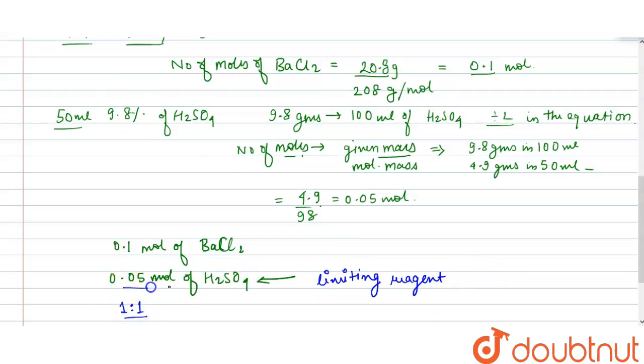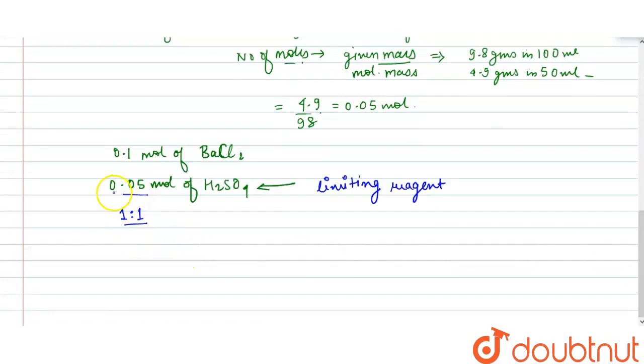As 0.05 mol of H2SO4 is only present, therefore only 0.05 mol of BaCl2 would also react.